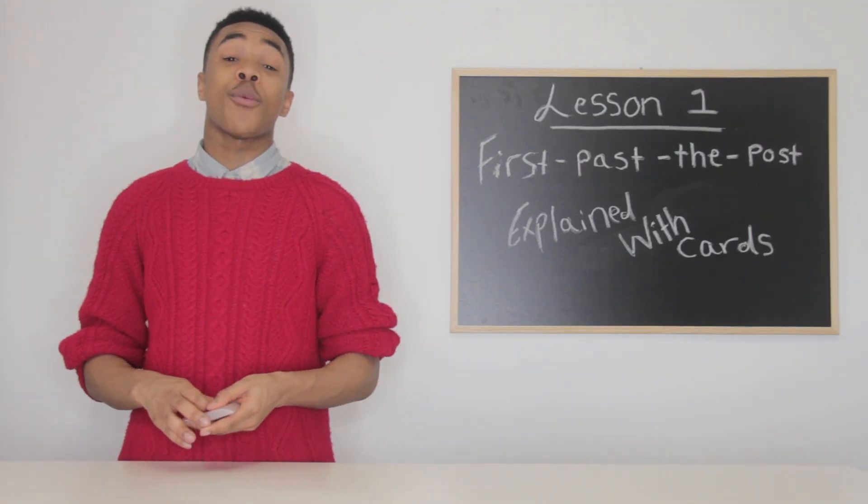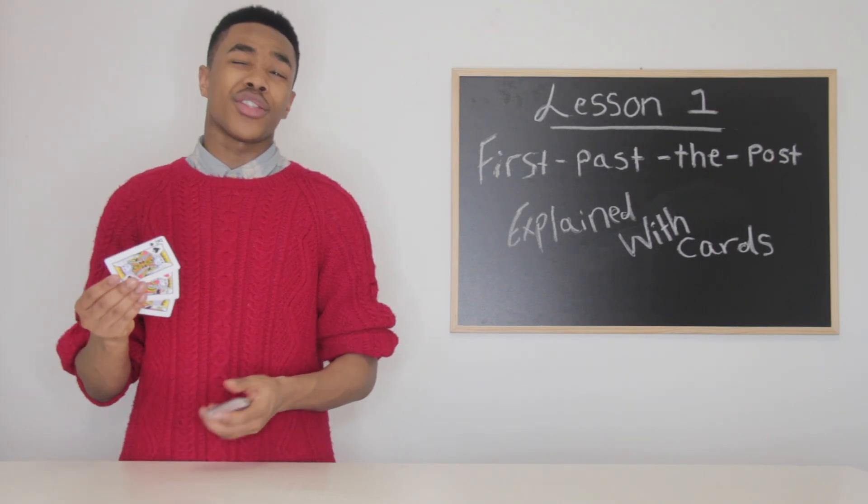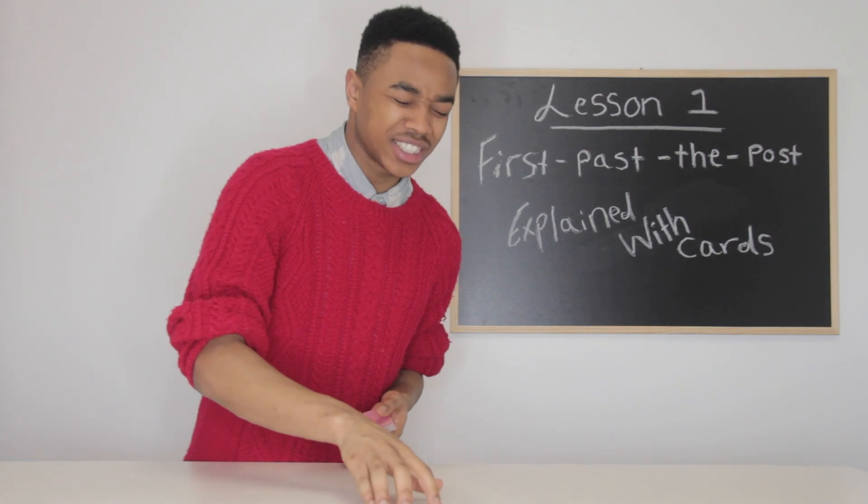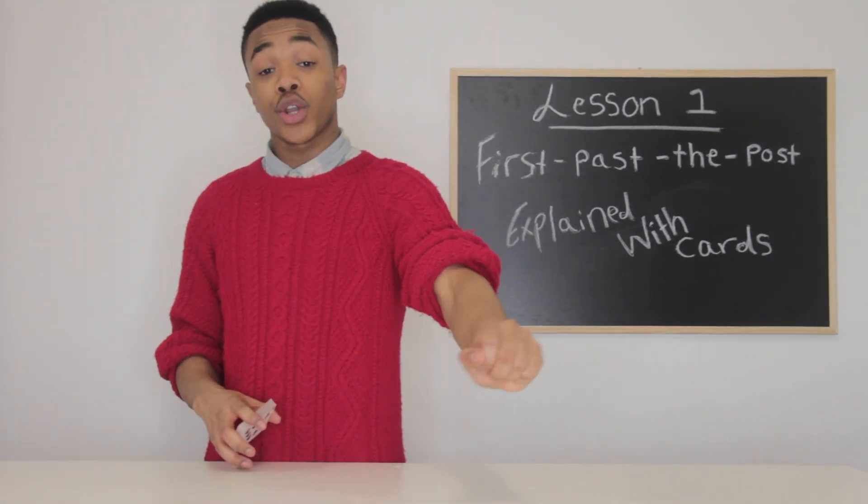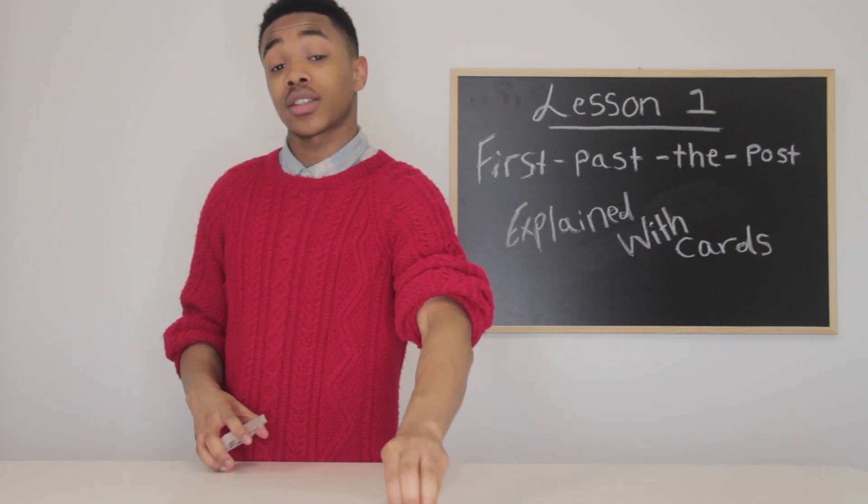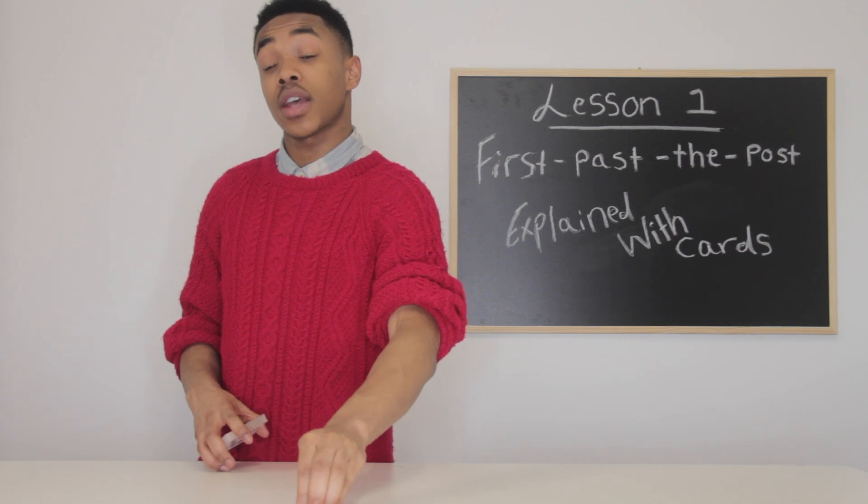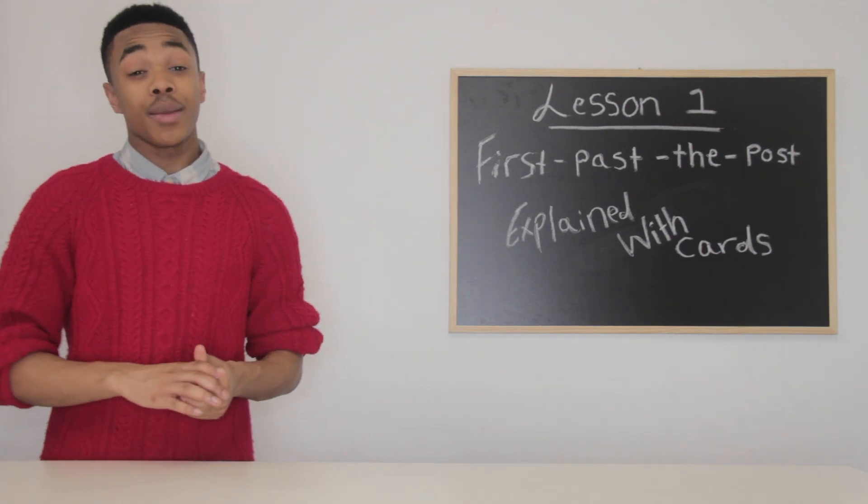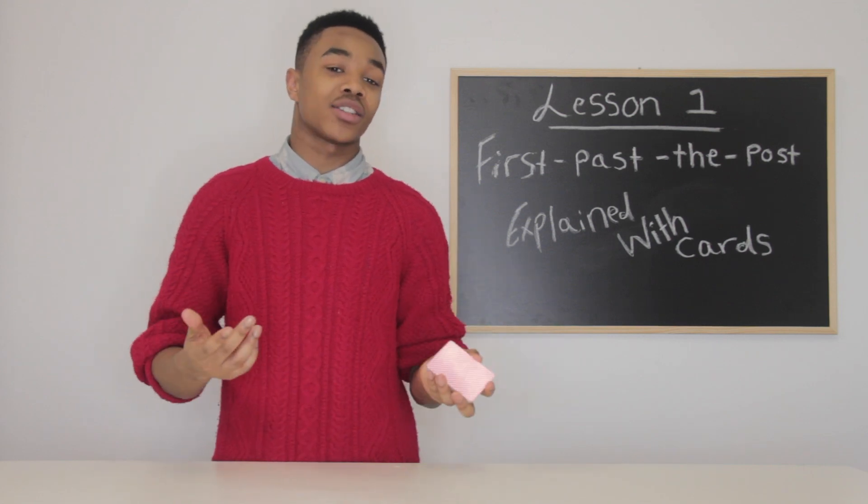So in a constituency, we have many parties, but mainly focusing today on the three parties. And think of a constituency as a district or borough. We have three main parties which are here. So we're going to have Tom representing the Liberal Democrats, and we're going to have Steve representing the Conservatives. And thirdly, we're going to have Rob representing the Labour MPs, which are potentially trying to get elected.